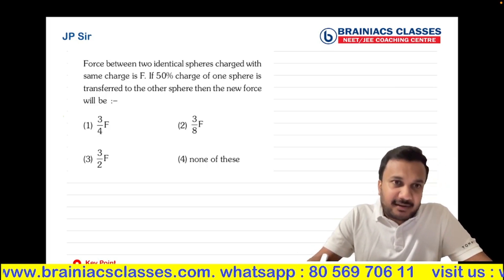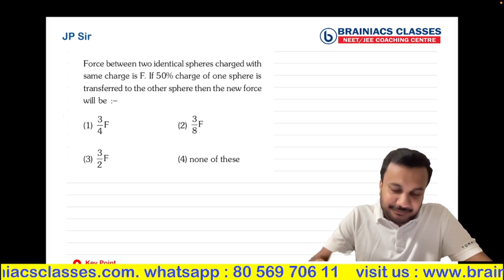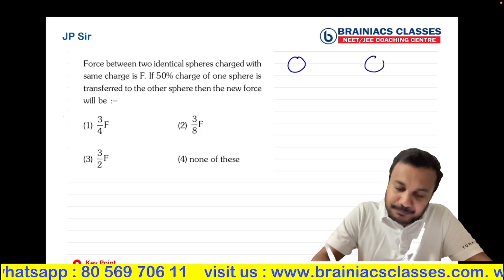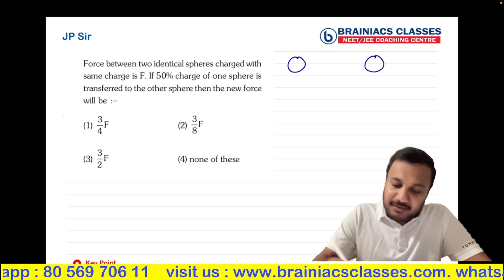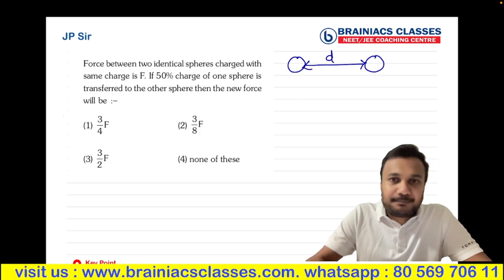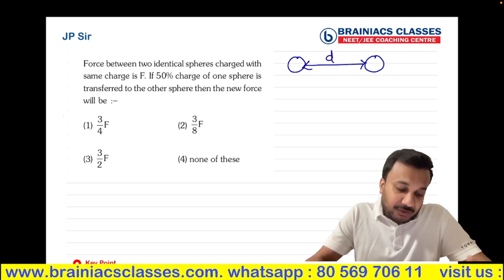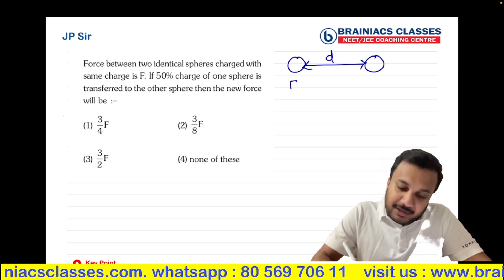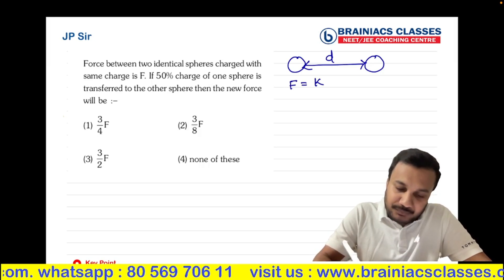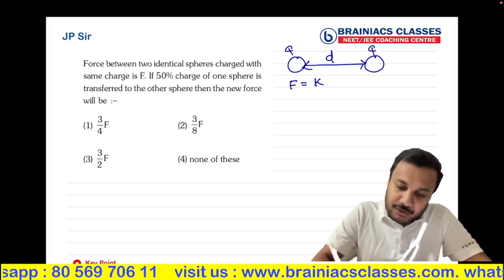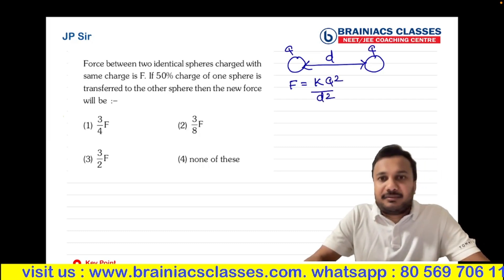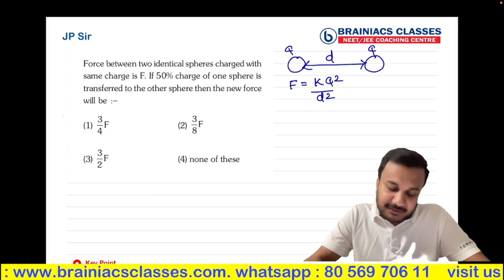Force between two identical charges is F, which means we have two charges. Let's assume the distance between the charges is called D and the total force is equal to F. We can simply write K into Q and Q, so KQ² by D² equals F.